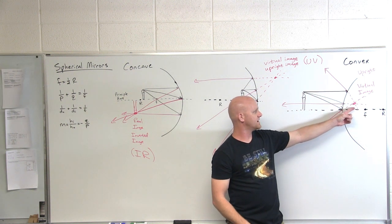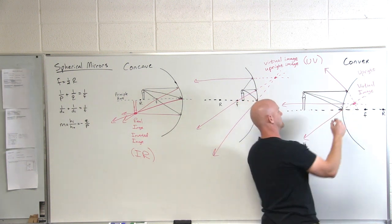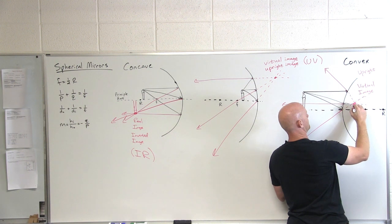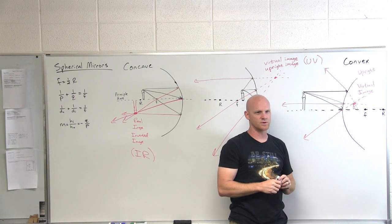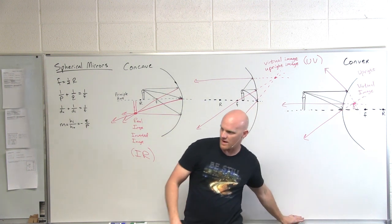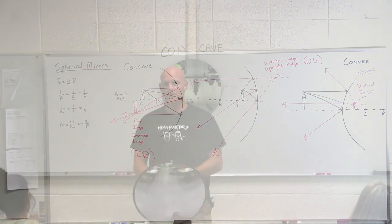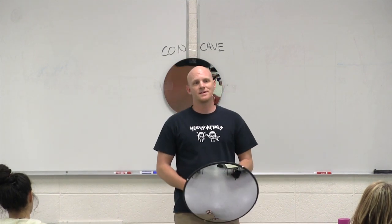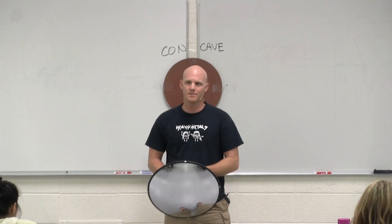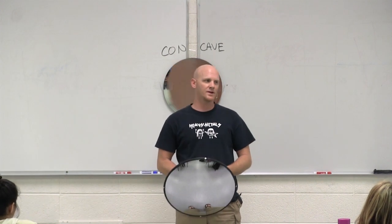If you also notice, does that image look like it's going to be bigger or smaller? Yeah, it looks like it's going to be much smaller than the original object. And you find that this is always true. So these kind of mirrors, I brought some props here today. We're going to look at spherical mirrors, sometimes called curved mirrors. And then we're going to look at thin lenses as well.